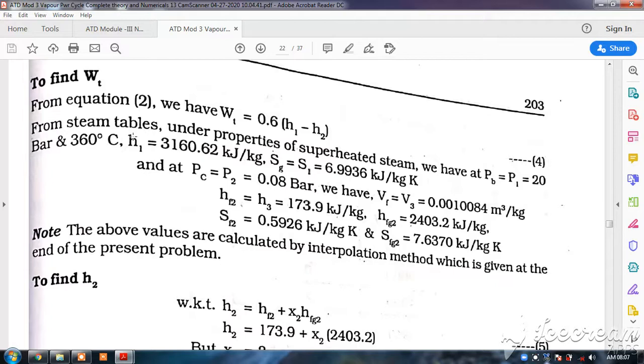You have got saturated tables for temperature basis up to 374 degrees and saturated pressure up to 222 bar - that is saturated steam. But here it is superheated steam, so you have to go to the superheated steam table.